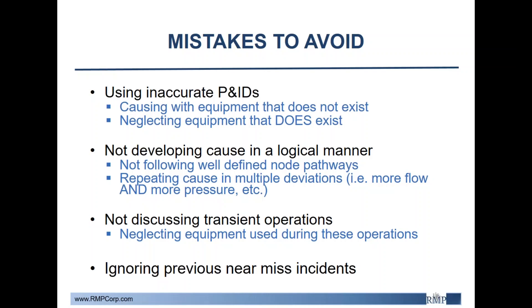Next would be not developing causes in a logical manner. This could involve not properly highlighting the node on the P&IDs or not following the process pathway well when discussing causes. This could lead to either missing information or, in contrast, repeating information. Repeating causes across multiple deviations can lead to inconsistencies within the study and is also a waste of the team's time.